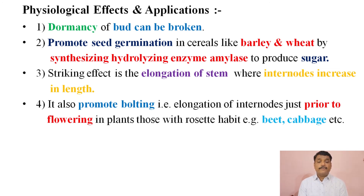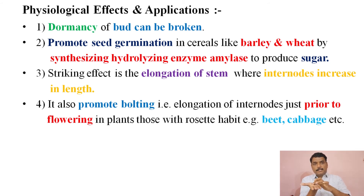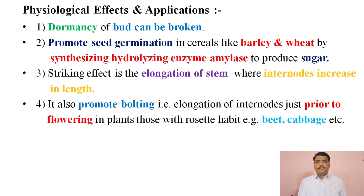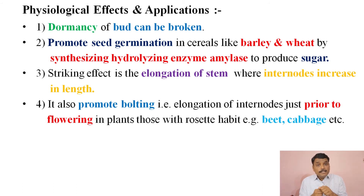The bolting effect is the elongation of internodes just prior to flowering. Plants which show rosette habit have a disc-shaped stem on which concentric rings of compressed internodes are present, and leaves are produced on those internodes. Examples include beet, sugar beet, and cabbage. Just before flowering, gibberellins cause the internodes to elongate and expand from this disc shape.